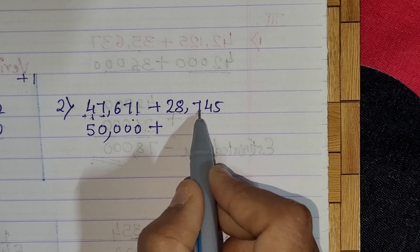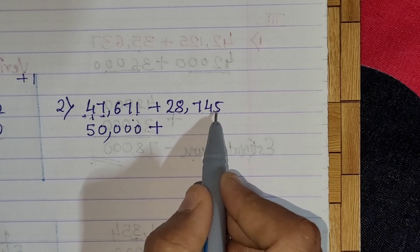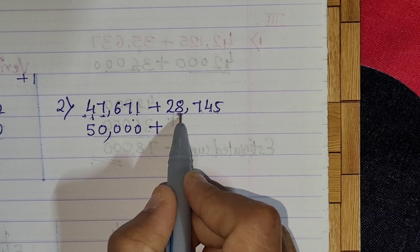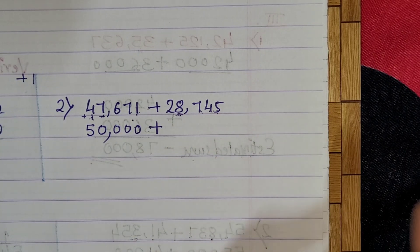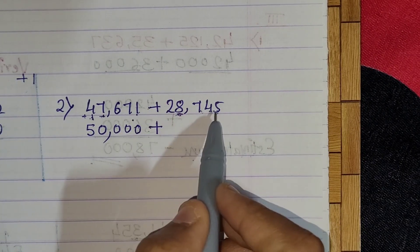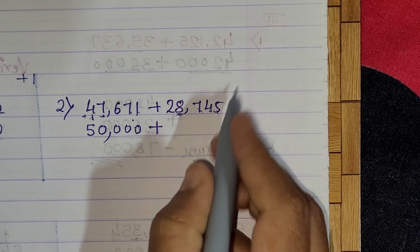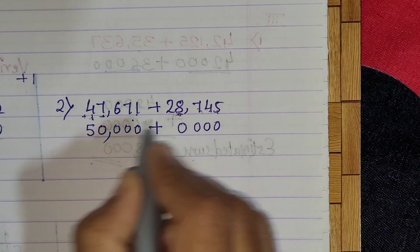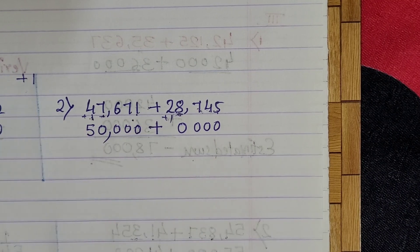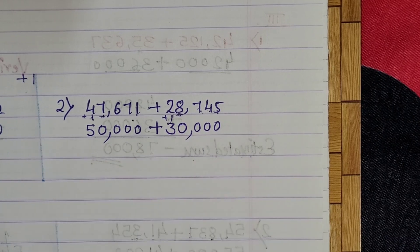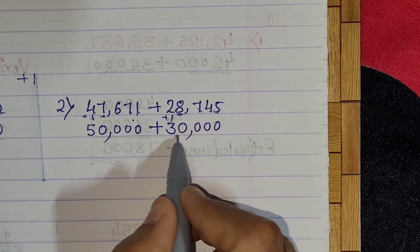For the next number, 28,745: look at the thousand place — it is 8, which is 5 or more, so replace unit, ten, hundred, and thousand by zero and add plus one to the ten thousand digit. So 2 plus 1 becomes 3 — let's put the comma — it is thirty thousand.